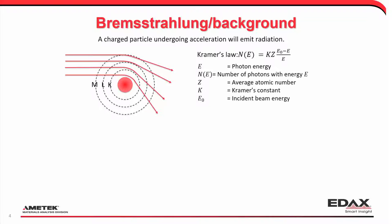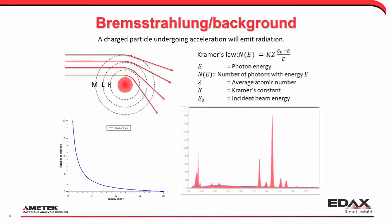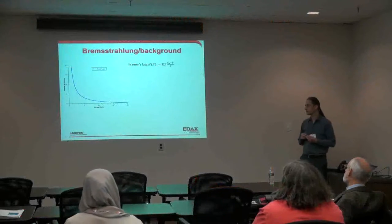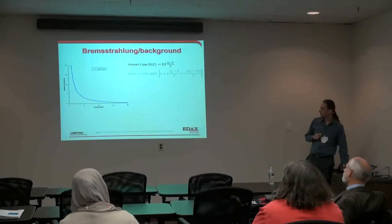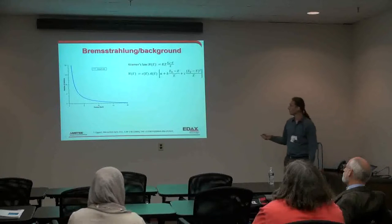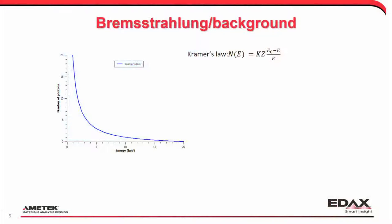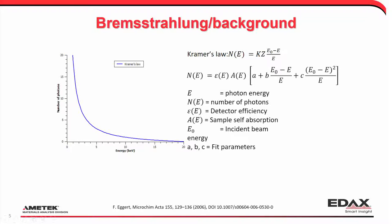If we plot Kramers' Law, the background increases as you go to lower energies, which is not what we see. The key difference is this is what is emitted — but our spectrum is what we see on the detector. This is what will be emitted from the sample, or from any given atom in the sample. This is the model we actually use in our background modeling, with a reference to Frank Eggert who covers exactly what this is.